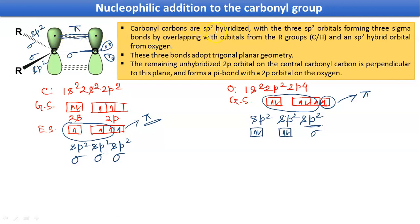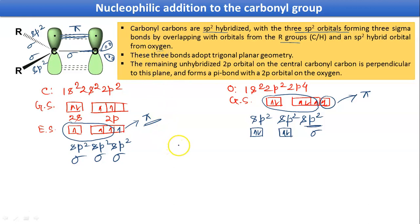So carbonyl carbons are sp2 hybridized, and also the oxygen is sp2 hybridized. The 3 sp2 orbitals will form 3 sigma bonds and overlap with the R groups — this R group may be carbon or hydrogen. The sp2 orbital from oxygen will be used for sigma bond formation with carbon. As it is sp2 hybridized, it will adopt a trigonal planar geometry.